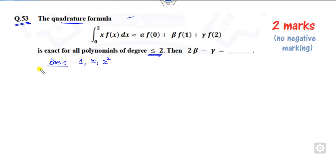Now take f(x) firstly as 1. You can substitute here. This is ∫x dx. Once you integrate it will be 4/2, that is 2. If you substitute f(x) as 1, this is nothing but alpha plus beta plus gamma.